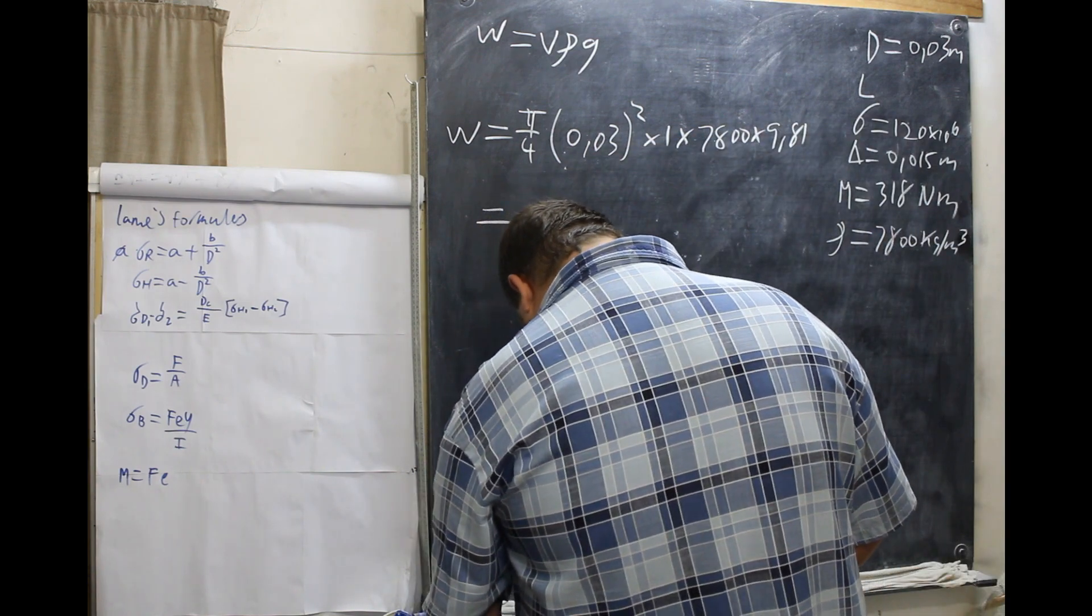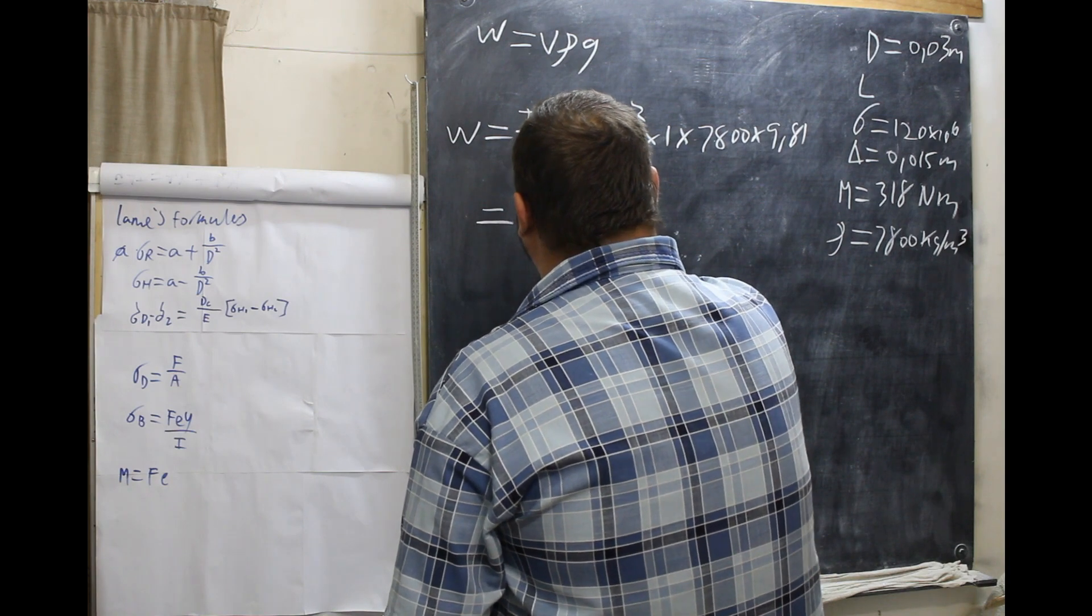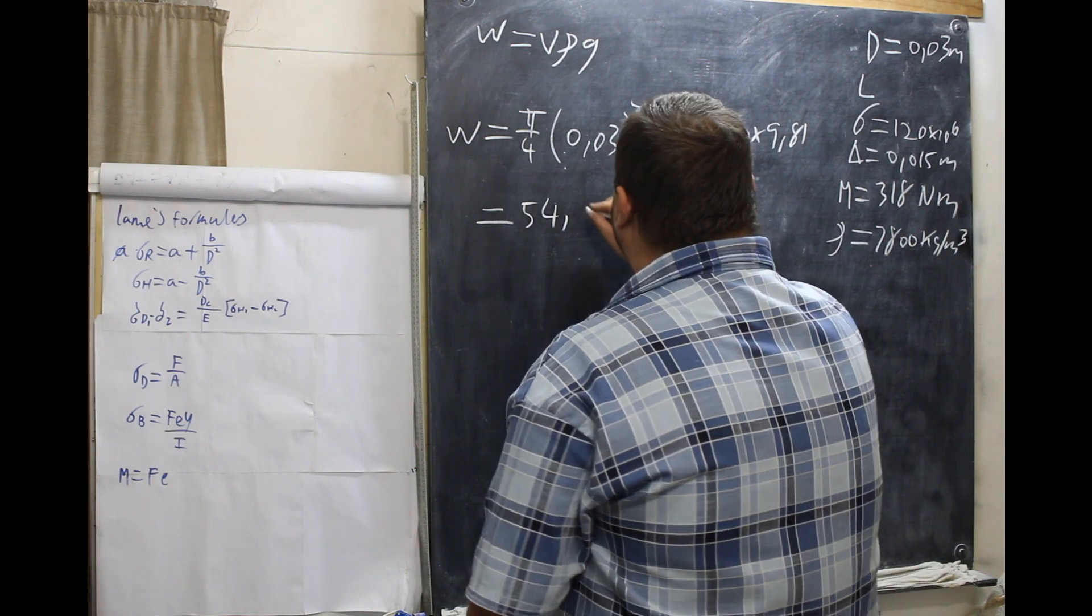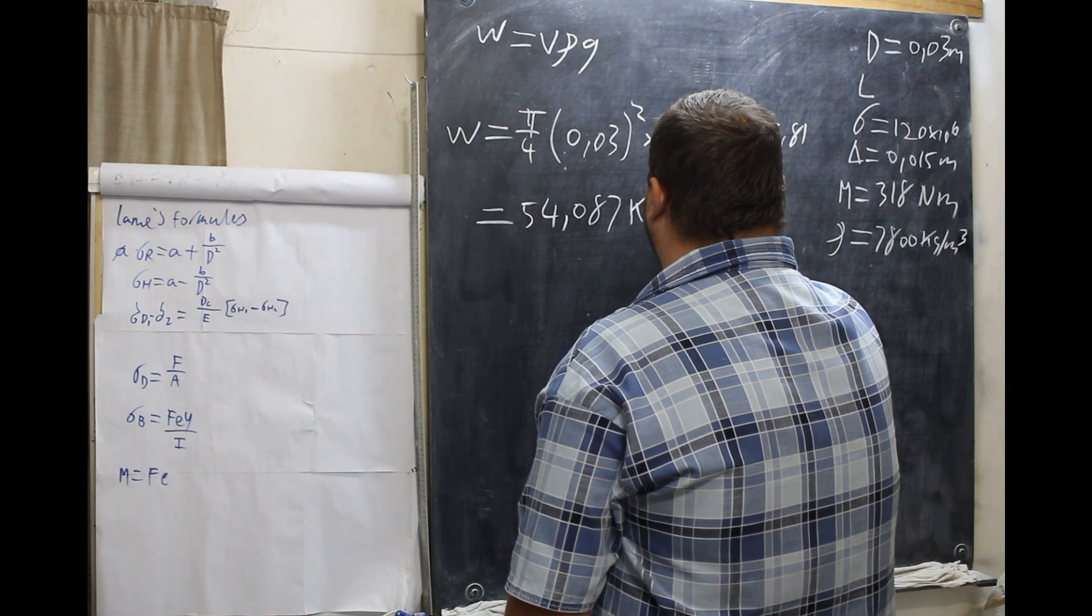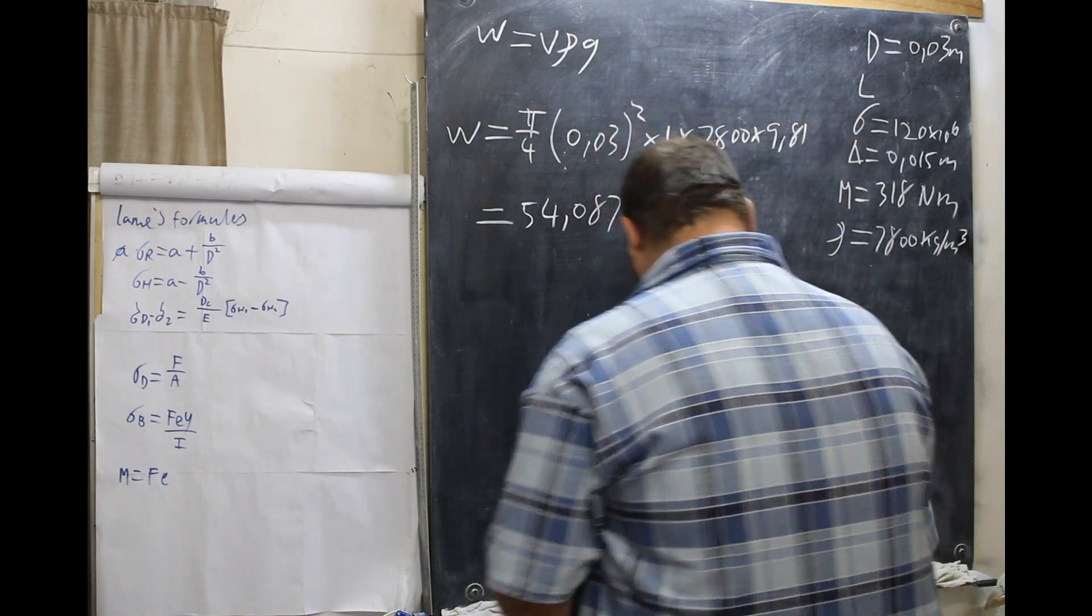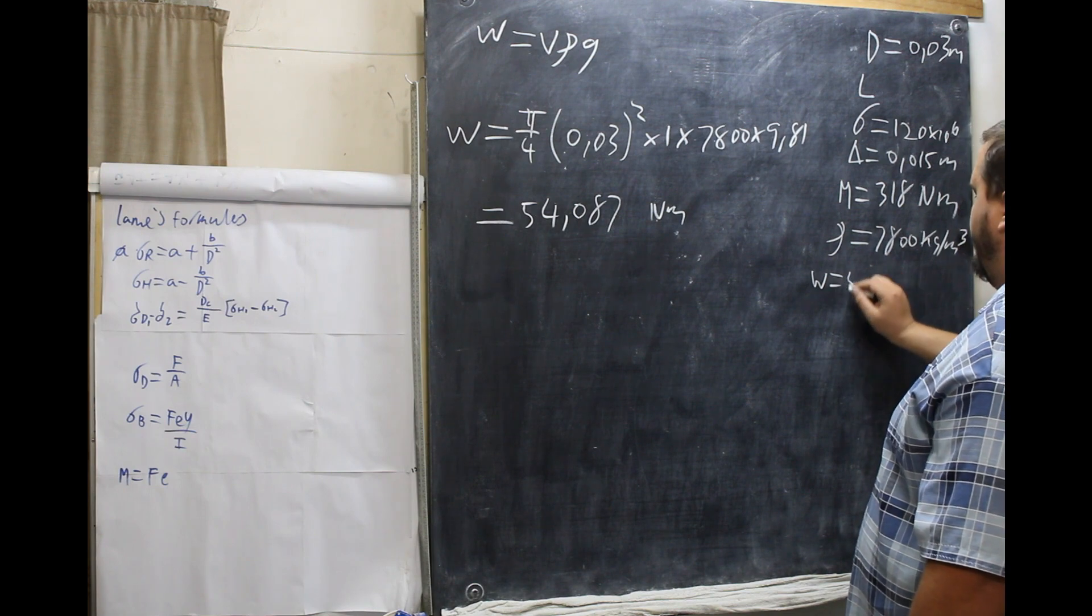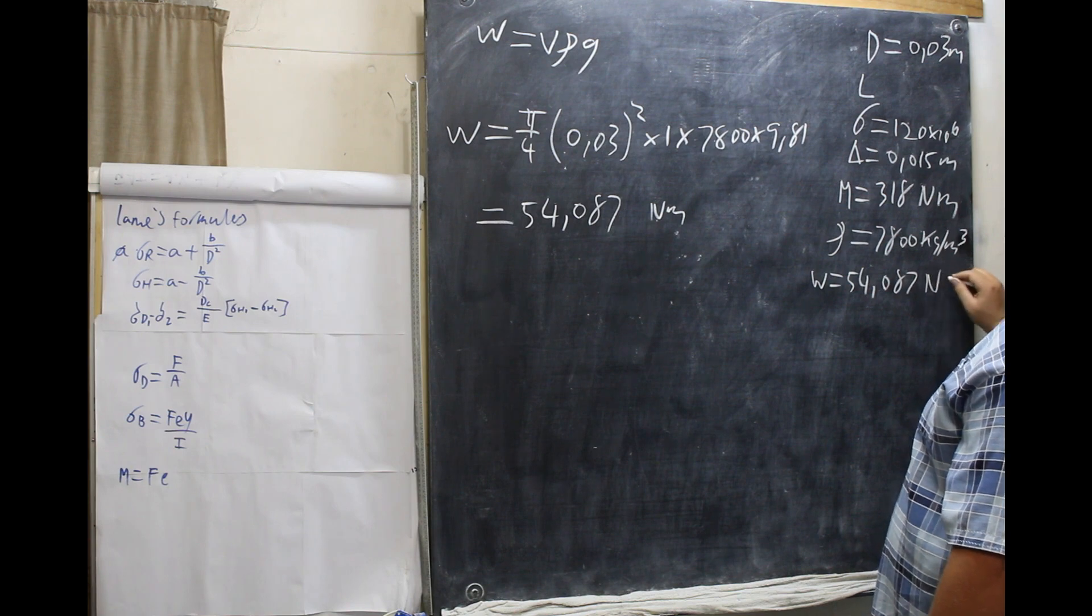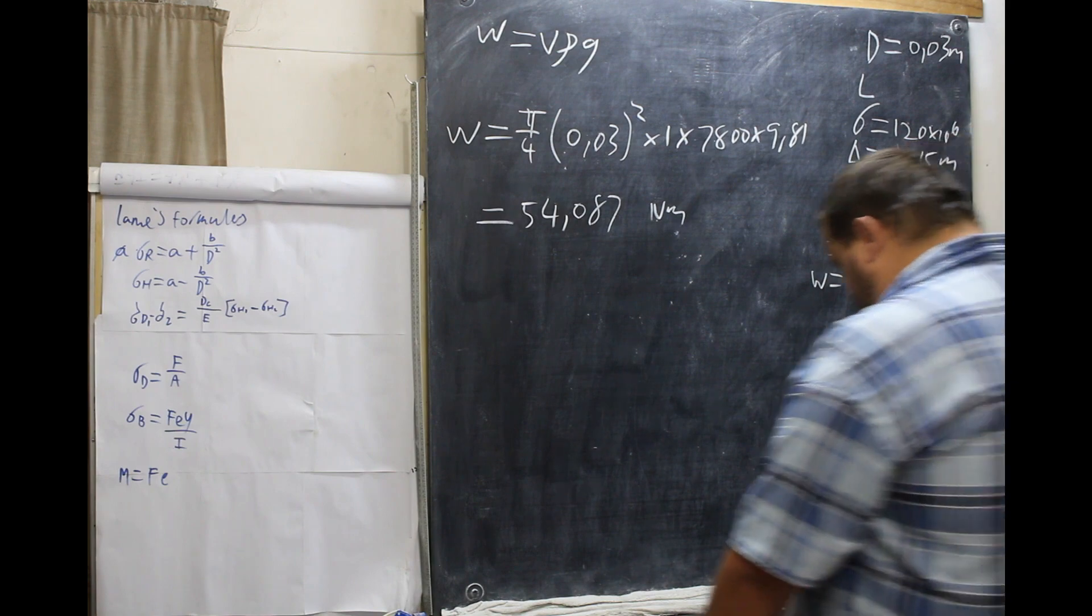Now, we've done that. And we are left with 54,087 Newton meters. So, weight is 54,087 Newton meters. Next.